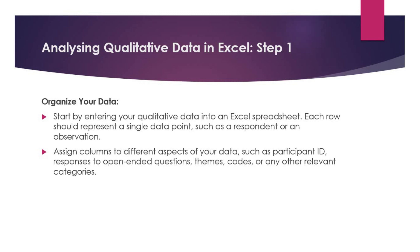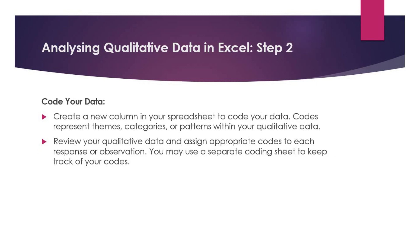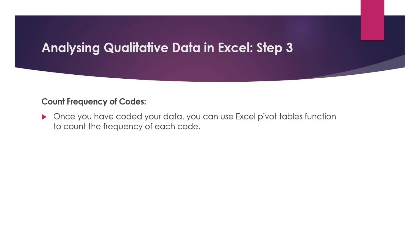Step 2: You need to assign columns to different aspects of the data if you want, but that's not extremely necessary. You should create a new column where you will have the codes for your data, and those codes represent themes, categories, or patterns within your qualitative data. Review your qualitative data and assign appropriate codes to each response or observation. You can use a separate coding sheet to keep track of your codes. Step 3: You can make use of pivot tables to count the frequency of your codes and calculate percentages if you wish.